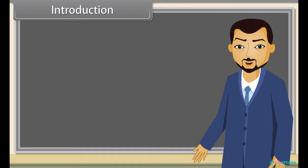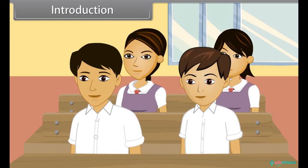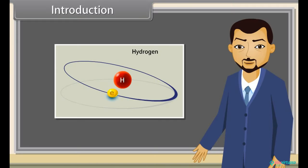Students, now we are going to know about the thing by which matter has been created. Can anyone of you tell me the name of that particular thing? Yes, you, Raoul. Sir, it is atom. Absolutely right. Atom is the smallest thing by which matter is made. Now let us study further to know more about atom.